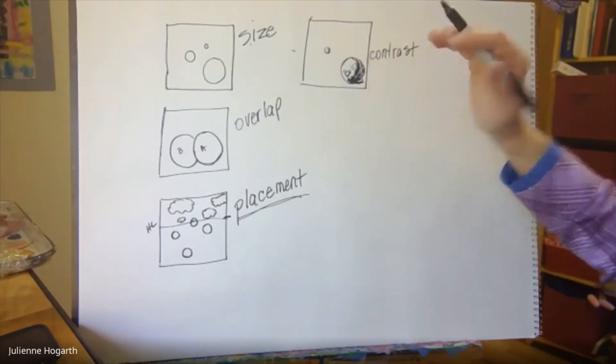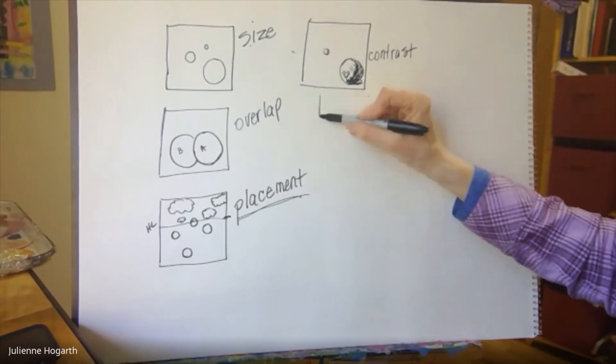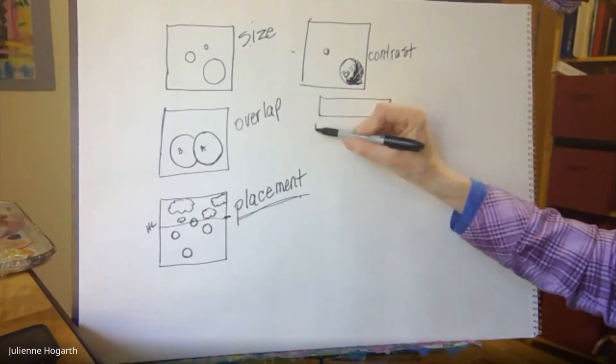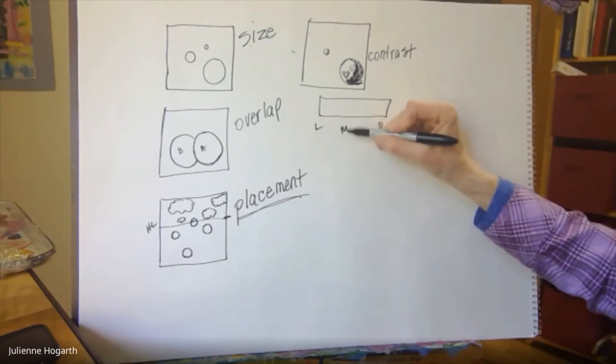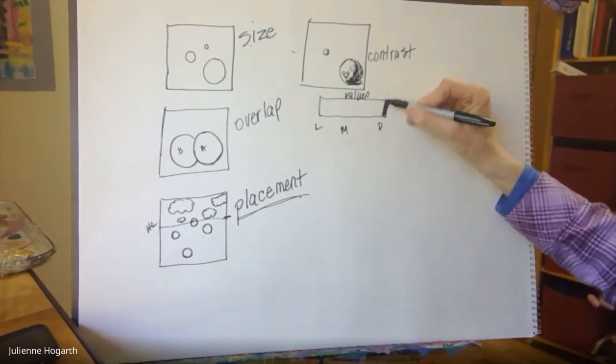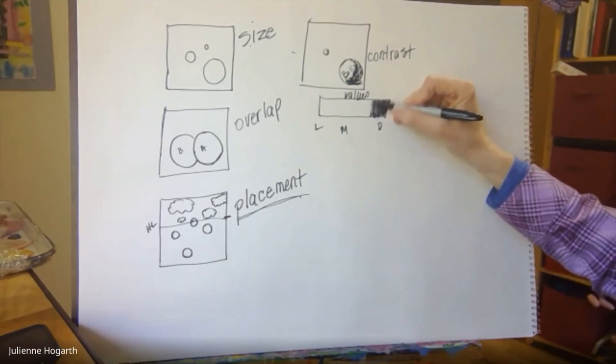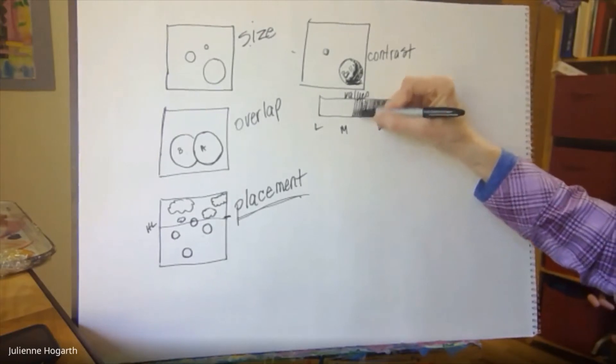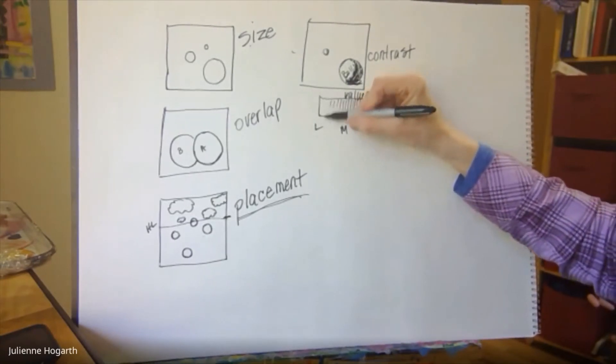There's a lot of pieces of the value square. Squares to the value scale. So light to dark. Light to dark and medium values. These are values in case you wonder. Okay so dark values. Medium values. And light values.